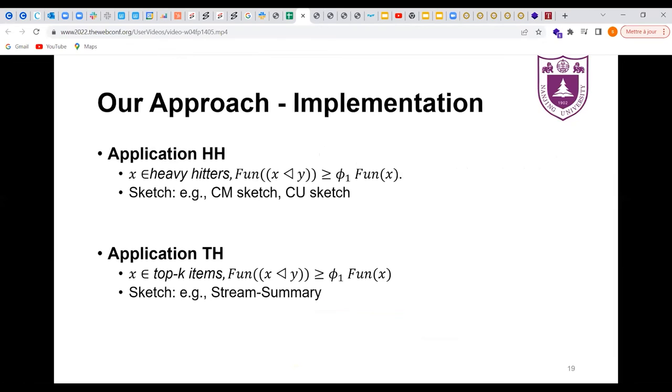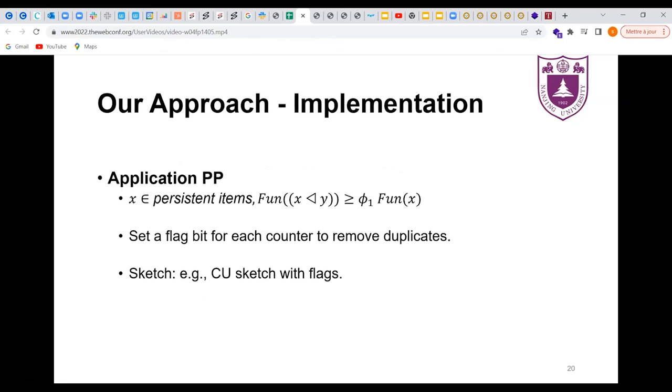We apply Duet to three applications. For each application, we need to set up the appropriate sketch for items. For application HH, we can set the sketch as count sketch, count min sketch, or CU sketch to estimate the frequencies of items. For application TH, we can set the sketch as space saving or stream summary to find top K items.